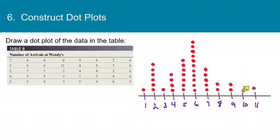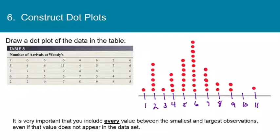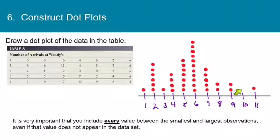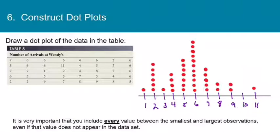You can see how this mimics a histogram where each class is just a single value. Clearly our tallest bar is the 6. It's very important that you include every value between the smallest and largest observations — even if that value does not appear in the data set, you cannot leave numbers off the number line. If a number is there with no dots, that means that class is empty, and that information is just as important as knowing there are lots of dots in another class. Never leave a number out just because it's blank.